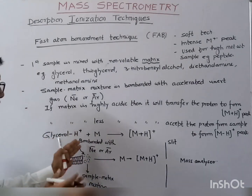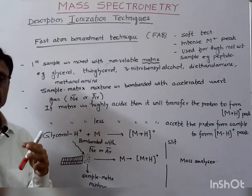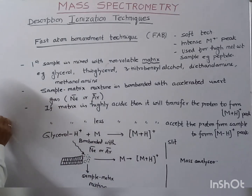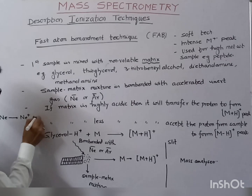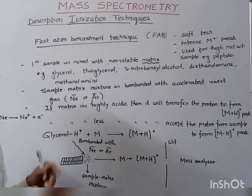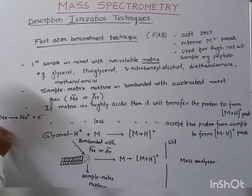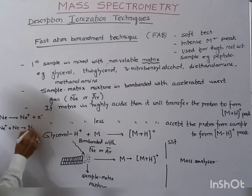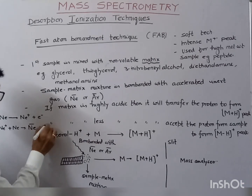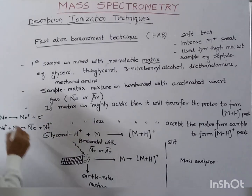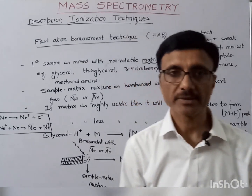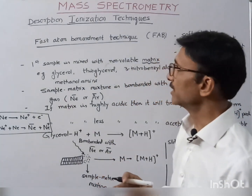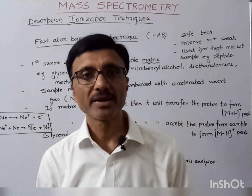If we have neon, then it will form an accelerated neon ion after losing an electron — though removal of the electron from neon is not easy. It then combines with excess neon to form an accelerated neon atom. In the same way, accelerated argon can also be used. So this is about the fast atom bombardment technique. Thank you.